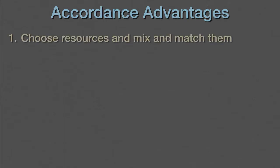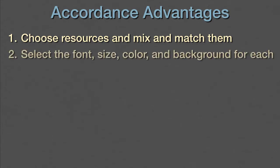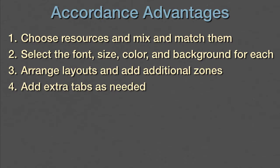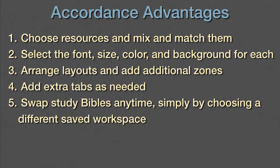Designing your own study Bible in Accordance has a number of advantages. First, we can choose our resources and mix and match them to our heart's content. Secondly, we can select the font, size, color, and background — after all, how many times have you struggled to read text that was too small in a dimly lit room, or with a blindingly white page in a room with too much light? Third, we can arrange our own layouts, adding as many additional zones as we want. Fourth, we can add as many extra tabs as we need. Fifth and finally, we can swap study Bibles at any time, simply by choosing a different saved workspace.